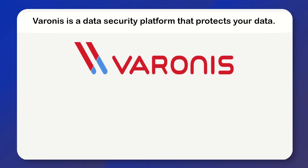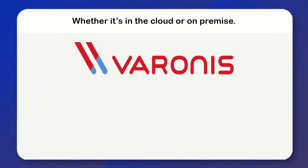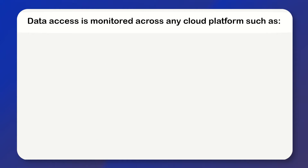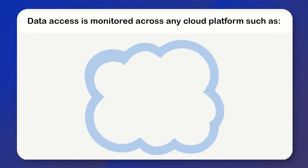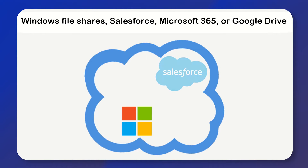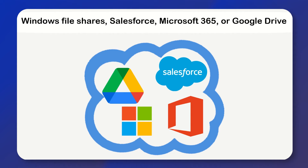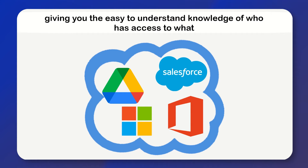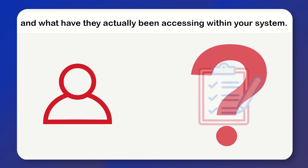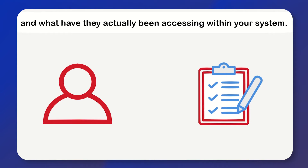Varonis is a data security platform that protects your data, whether it's in the cloud or on-premises. Data access is monitored across any cloud platform, such as Windows File Shares, Salesforce, Microsoft 365, or Google Drive, giving you easy-to-understand knowledge of who has access to what and what they have actually been accessing within your system.